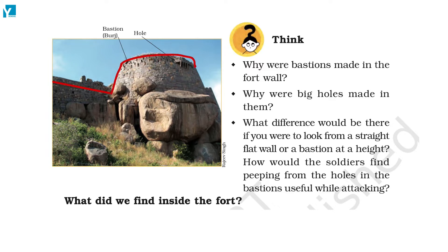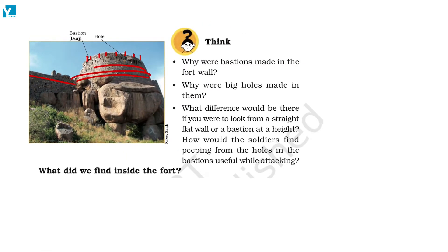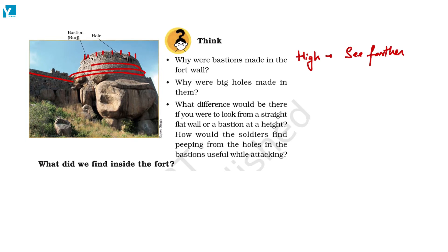A bastion is this large area where people used to stand on top — it's like a big cylinder. It is so high above the wall that you can see farther away and spot any incoming threat, be it armies or other people.